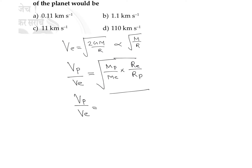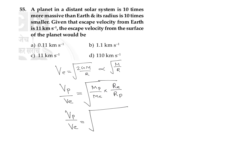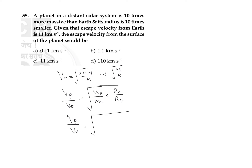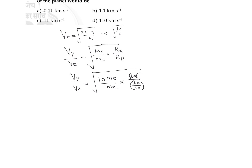The planet is 10 times more massive than Earth, so the mass of the planet equals 10 times the mass of Earth. Its radius is 10 times smaller, so the radius of the planet equals the radius of Earth divided by 10. We can cancel the mass of Earth and the radius of Earth terms in the expression.